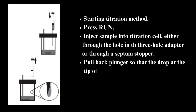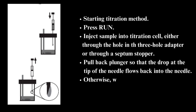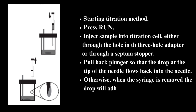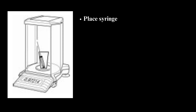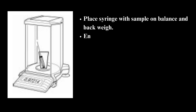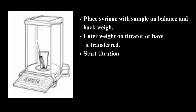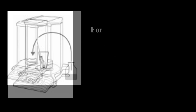Pull back the plunger so that the drop at the tip of the needle flows back into the needle. Otherwise, when the syringe is removed, the drop will adhere to the septum. Place the syringe with sample on the balance and back-weigh. Enter the weight on the titrator or have it transferred, then start the titration.